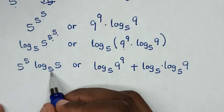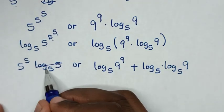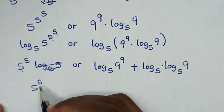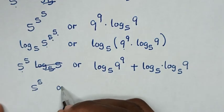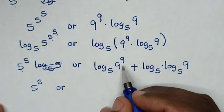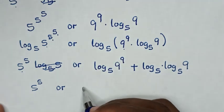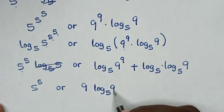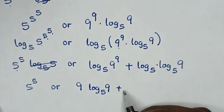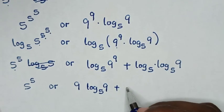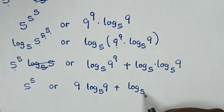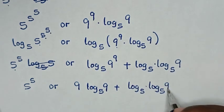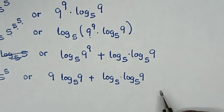Log base 5 of 5 equals 1 and cancels, leaving 5 power 5 on the left. On the right, the power 9 moves to the front giving 9 times log base 5 of 9, plus log base 5 of (log base 5 of 9).